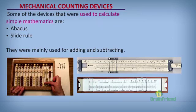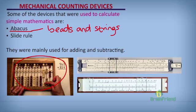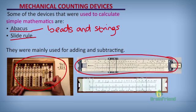Now the mechanical counting devices. We have the abacus, which is made up of beads and strings and was used in the early years to add and subtract numbers. We also have the slide rule, which was also used to add and subtract numbers.